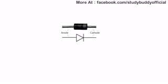Here's the schematic symbol of a diode and a picture of the real thing. The little stripe on the end of the diode tells you which way to put it in your circuit. But what is a diode?